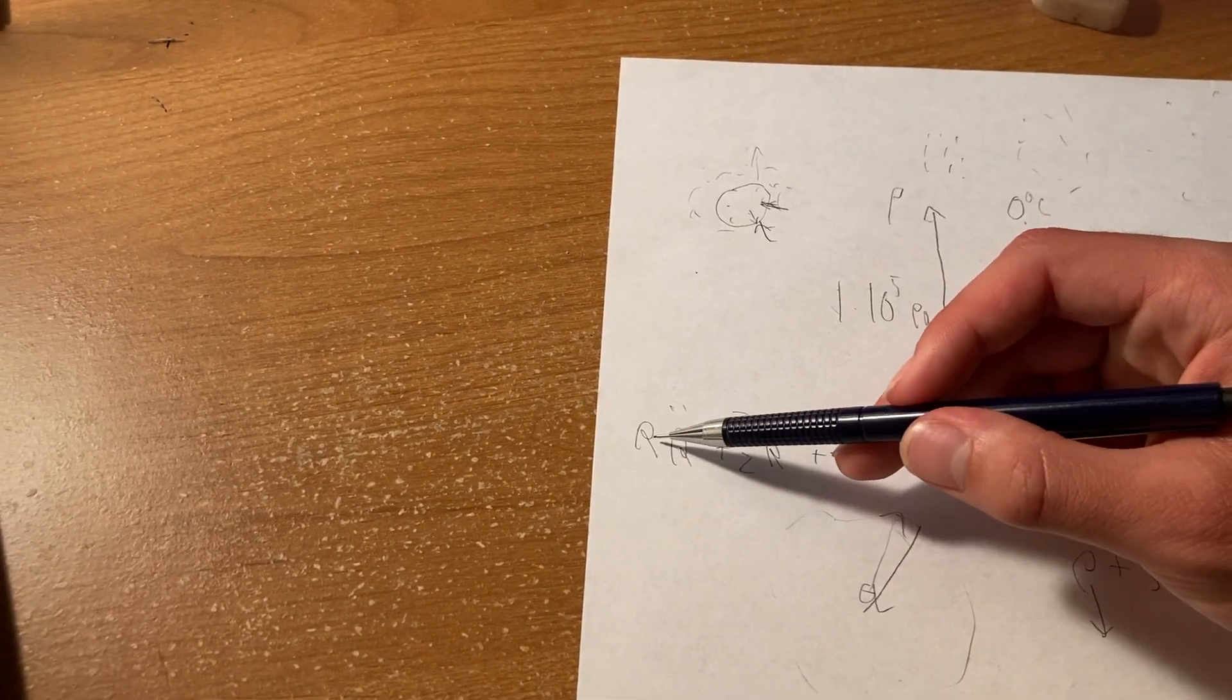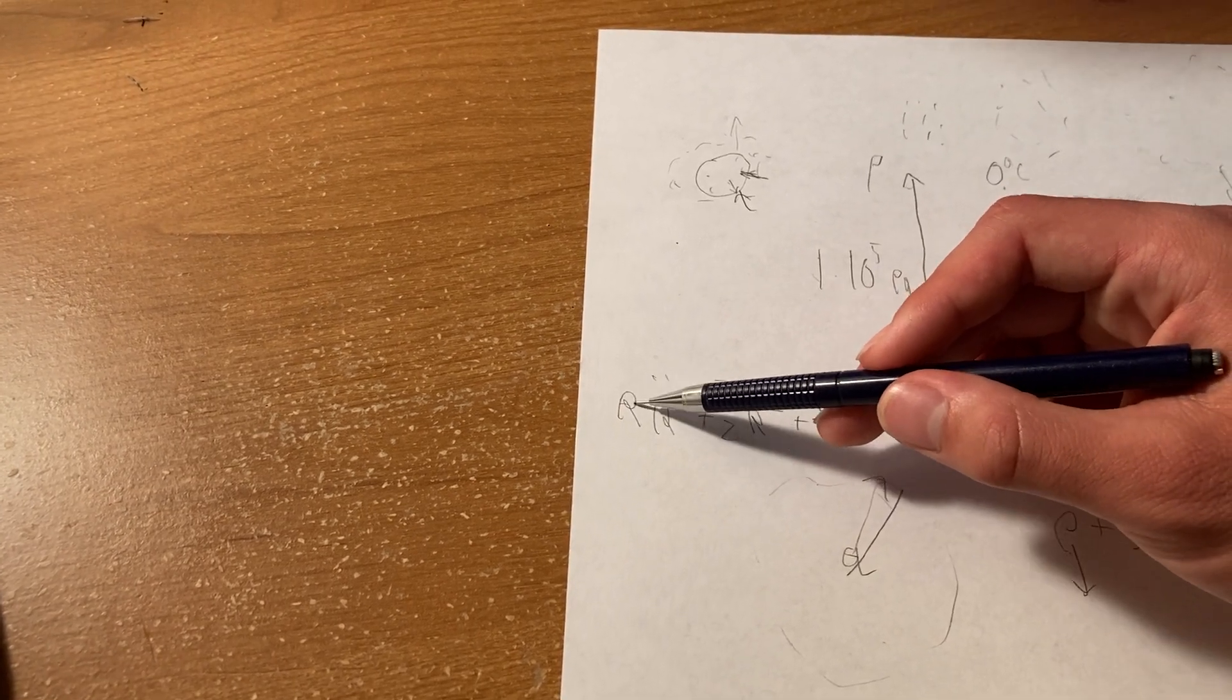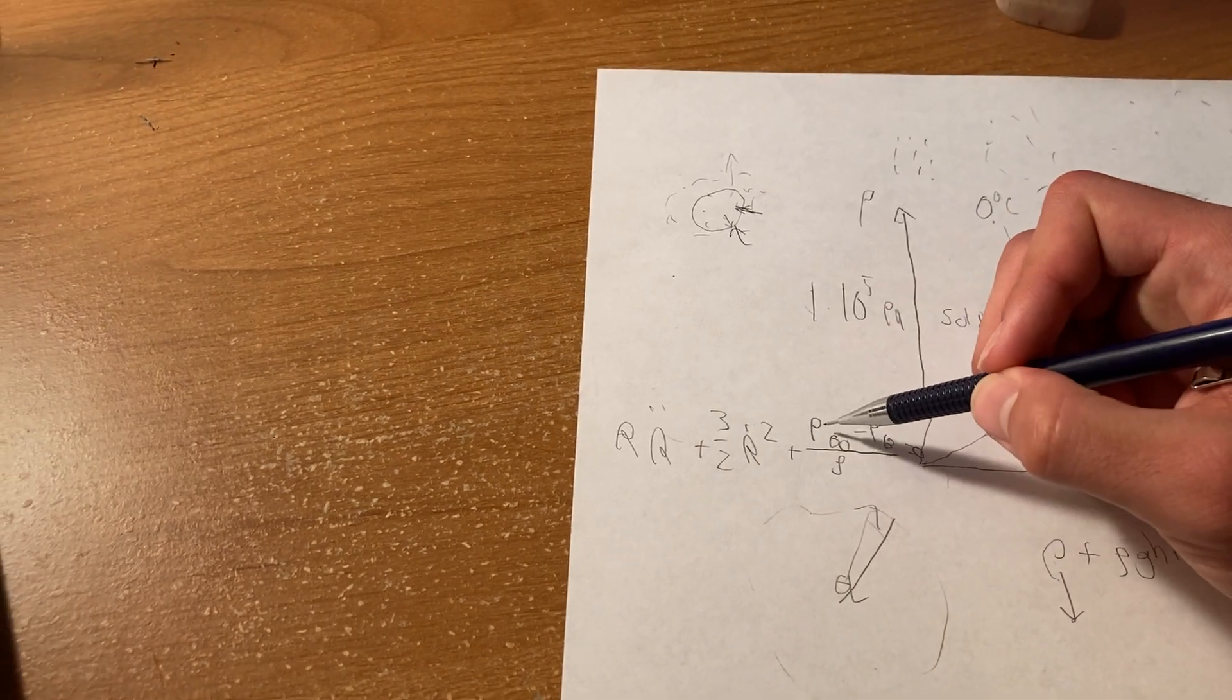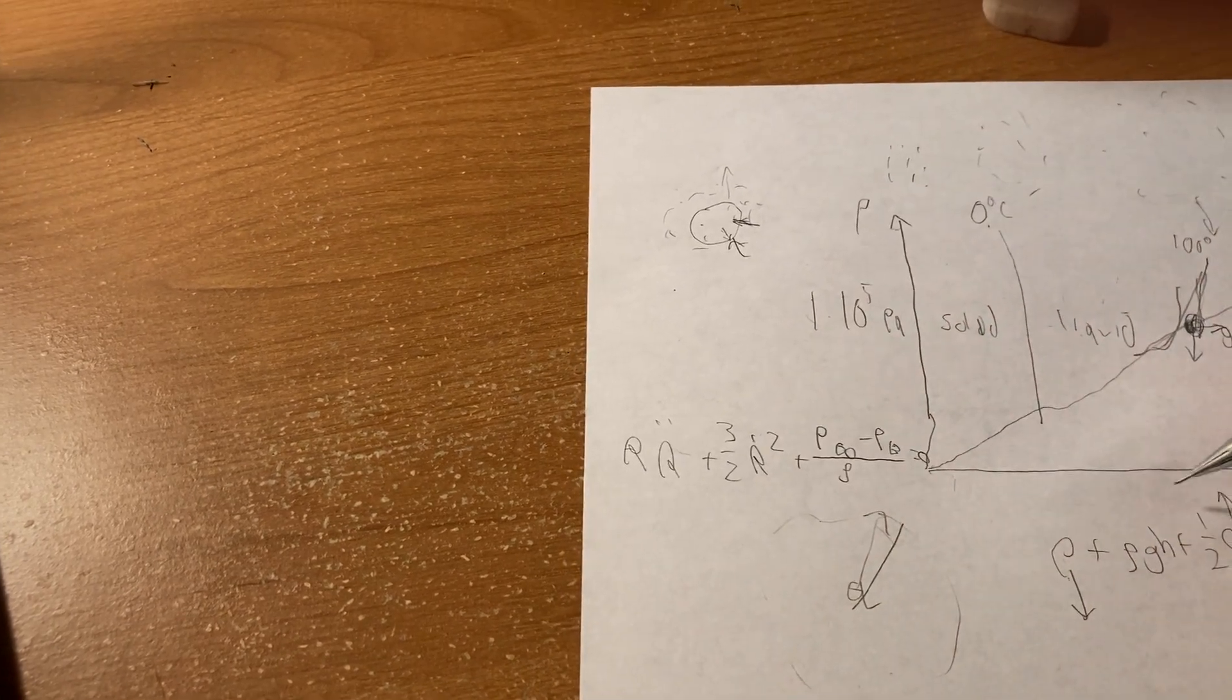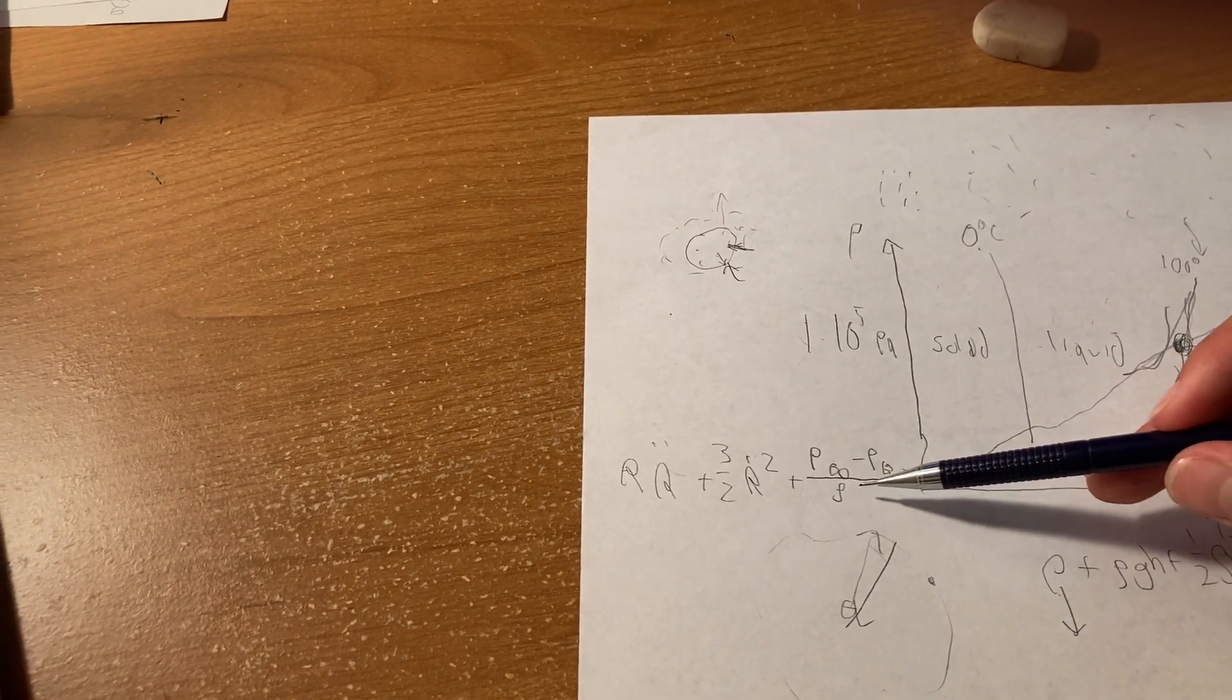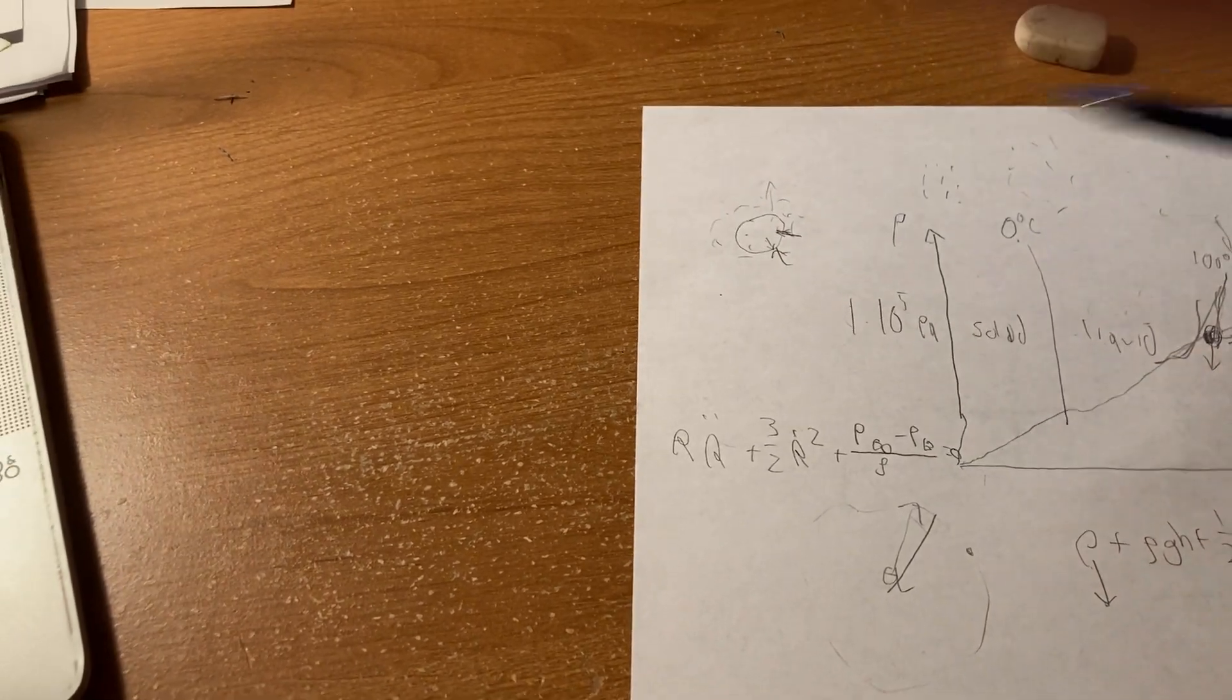R is the variable representing the radius of the bubble over time. Having one dot means it's the first derivative, two dots means it's the second derivative. And then P is for pressure. P sub infinity is the pressure infinitely far away from the bubble. And then P sub B is the pressure on the boundary right here. And then rho is just the density of the liquid. All of this equals 0.